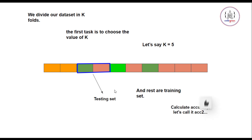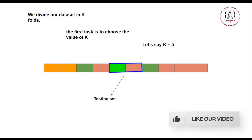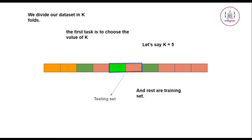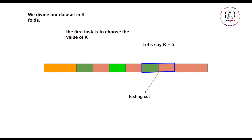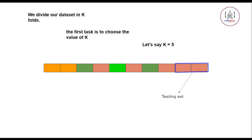We calculate accuracy 2 for iteration 2. Similarly, in iteration 3, fold 3 serves as our testing set and the rest are training. We calculate accuracy 3. In the fourth iteration, fold 4 is the testing set and the rest are training — we calculate accuracy 4. Finally, in the fifth iteration, fold 5 is our testing set and the rest are training, and we calculate accuracy 5.